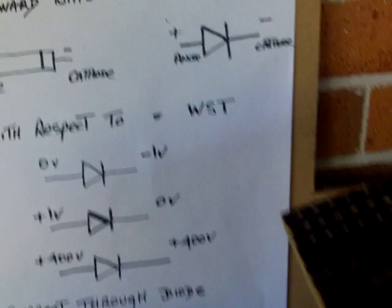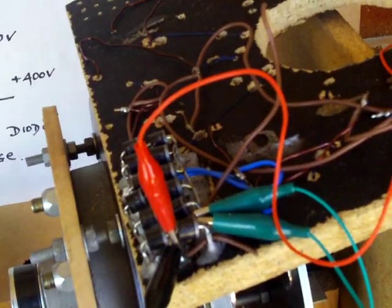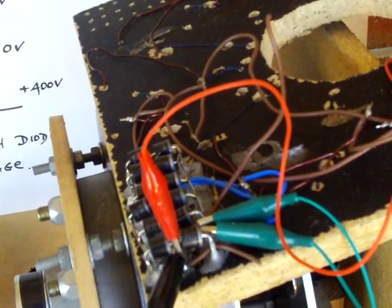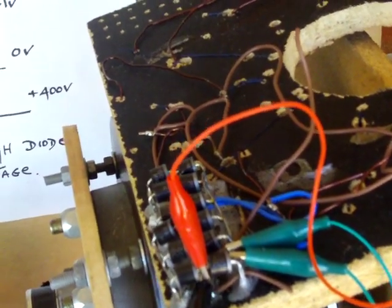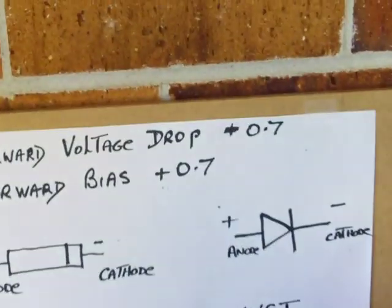The packaging, as per example: the banded end is the cathode, the other end is the anode. Schematically as shown.